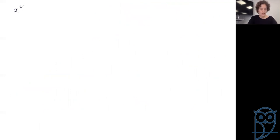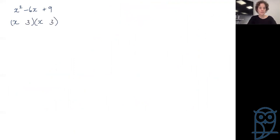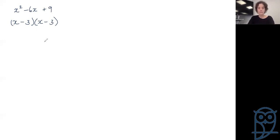Example: x squared minus 6x plus 9. We look for factors of 9 which add to give 6 — that's 3 and 3, since 3 times 3 is 9 and 3 plus 3 is 6. We have plus c, so both brackets must have the same sign. We have minus b, so the sign must be minus. Answer: (x − 3)(x − 3).